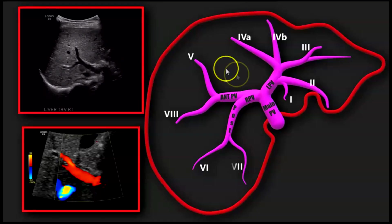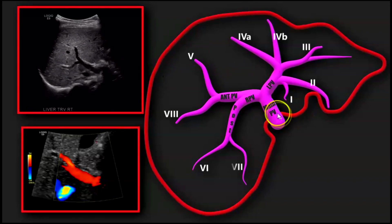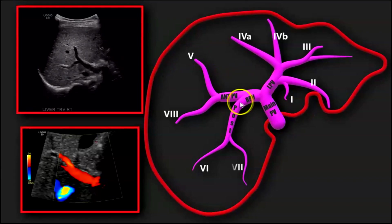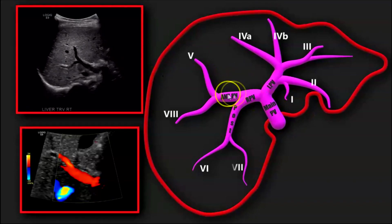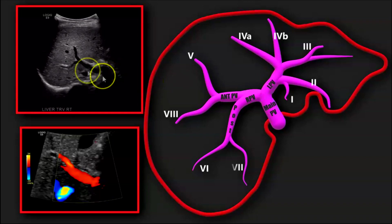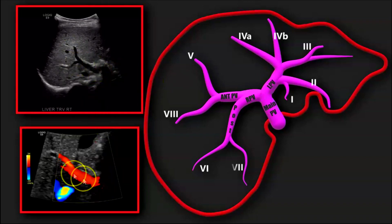Let's take a look at the normal. Here you can see a transverse view: main portal vein, right anterior, right posterior, and left portal vein. Here's the main portal vein, right anterior, right posterior, and again the main portal vein.